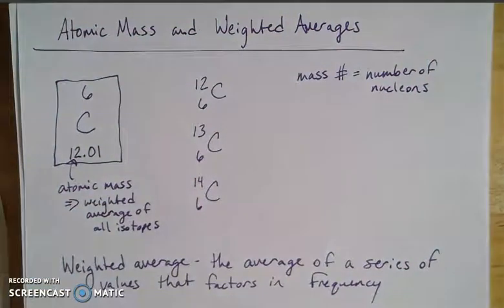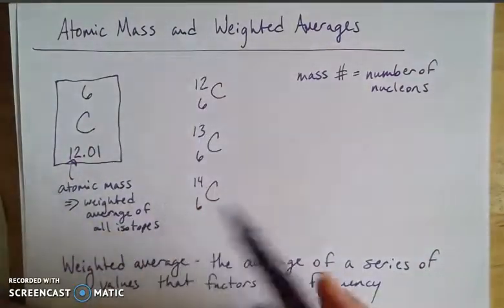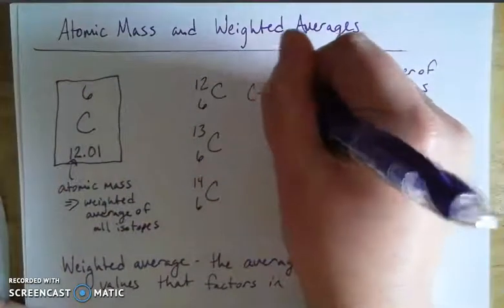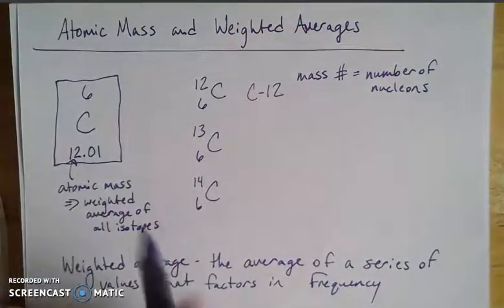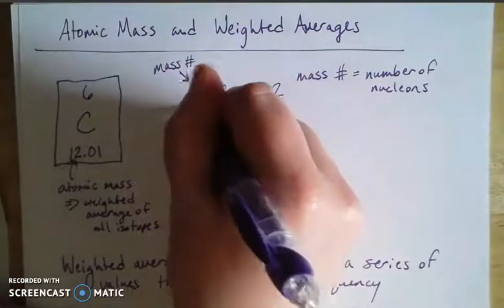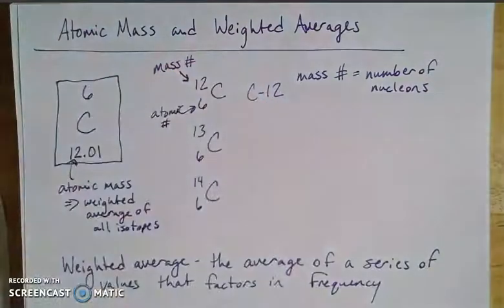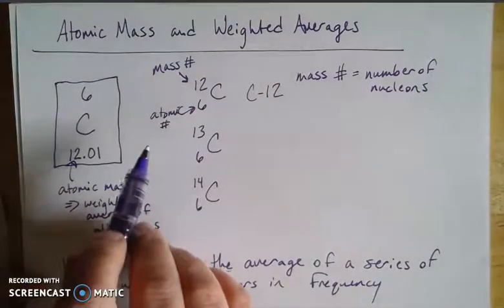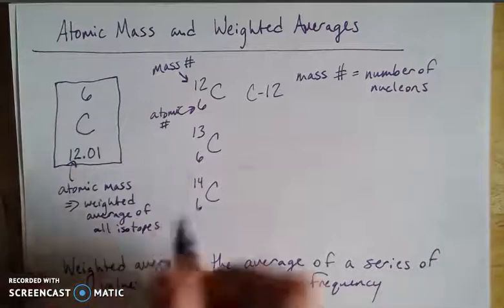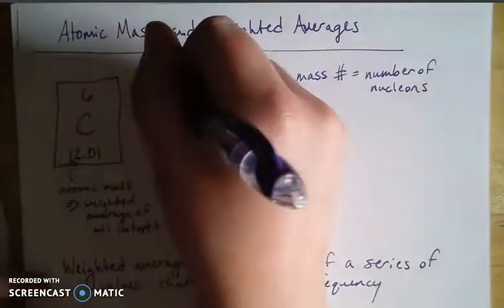Because one proton and one neutron each equal one atomic mass unit, when we write a nuclide symbol — and you can write it in two equivalent ways — we have the mass number at the top and the atomic number at the bottom. For reasons I can't explain, atomic number is abbreviated Z and mass number is abbreviated A.